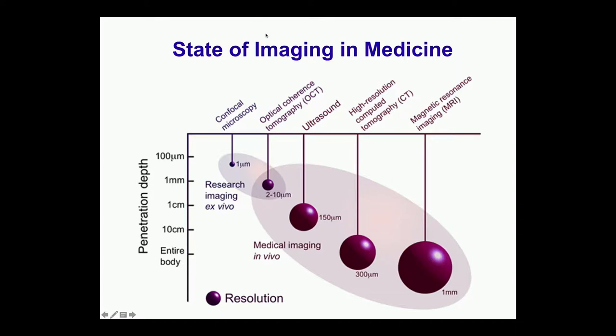There is confocal microscopy, PET, magnetic resonance, ultrasound — all have their place. But as you see in this chart, there is a problem with penetration depth and sensitivity. In MRI, which is awesome for deep tissue imaging, the penetration depth is great but the resolution doesn't work very well. Confocal microscopy is awesome in terms of resolution, but the penetration depth is very poor, so it doesn't really work well in live human imaging.